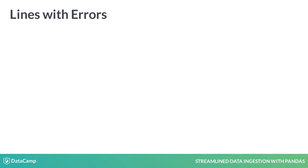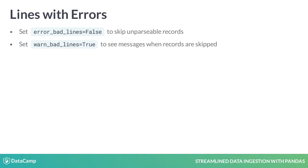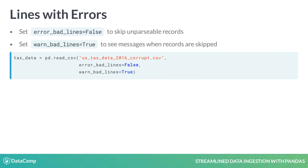Luckily, we can change this behavior with two arguments: error_bad_lines and warn_bad_lines. Both take Boolean, or true-false, values. Setting error_bad_lines to false makes Pandas skip bad lines and load the rest of the data, instead of throwing an error. warn_bad_lines tells Pandas whether to display messages when unparsable lines are skipped. Let's try importing the corrupted file again, this time with error_bad_lines set to false and warn_bad_lines equal to true.